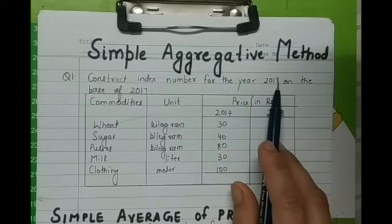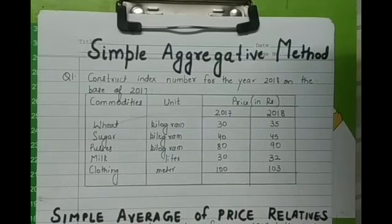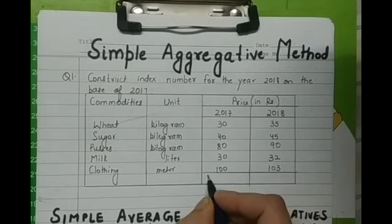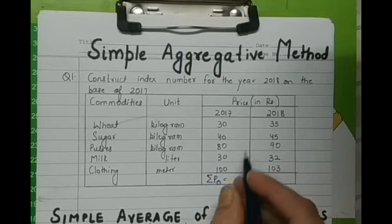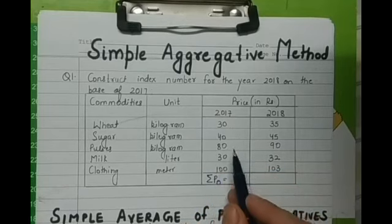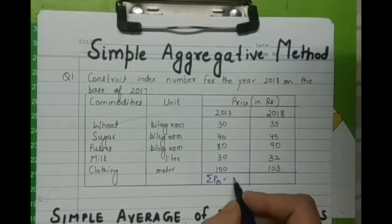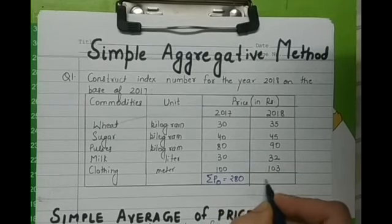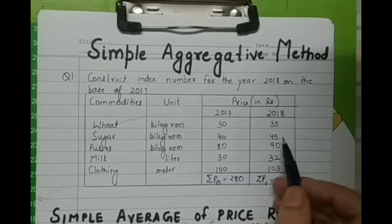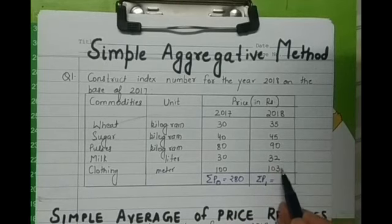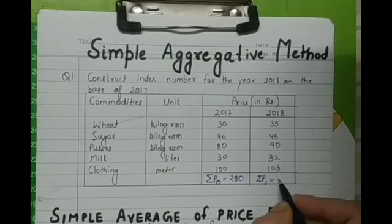So the current year in this question is 2018 and the base year is 2017. How will we proceed? First of all, we will be totaling up the prices of the base year. So these are the prices: 30 plus 40 plus 80 plus 30 plus 100, you will get 280. Then the prices of the current year: 35 plus 45 plus 90 plus 32 plus 103, you will get 305.